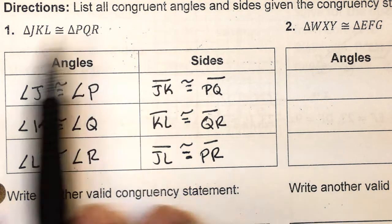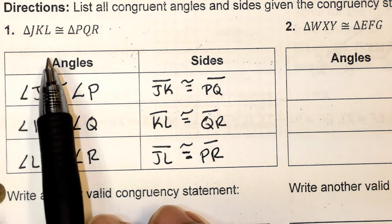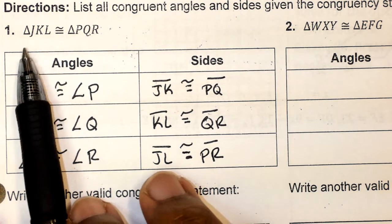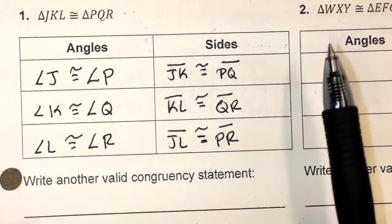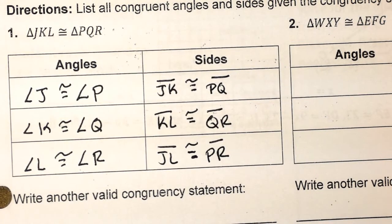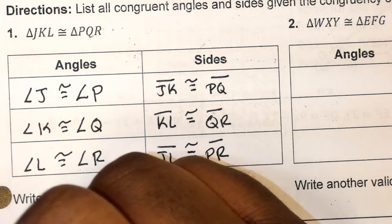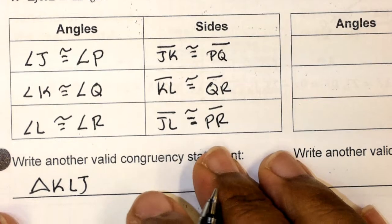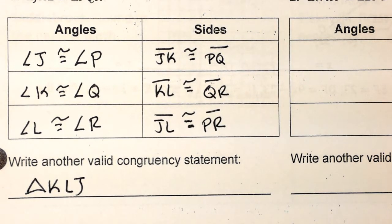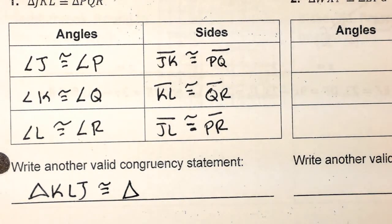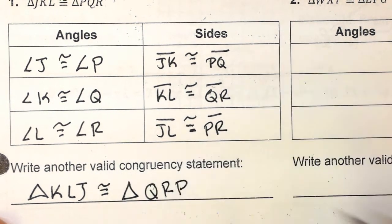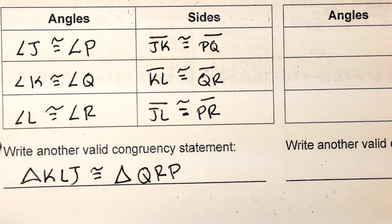Now, they wrote the congruency statement that way, but that's not the only way you can write it. It doesn't matter how you start — it's the finish that matters. They said write another valid congruency statement. So I can rename my first triangle — say I call it triangle KLJ. Then the second triangle's congruency statement has to match: it would be triangle QRP. I can rename them like that and everything still matches up. Doesn't matter how you start, it matters how you finish.